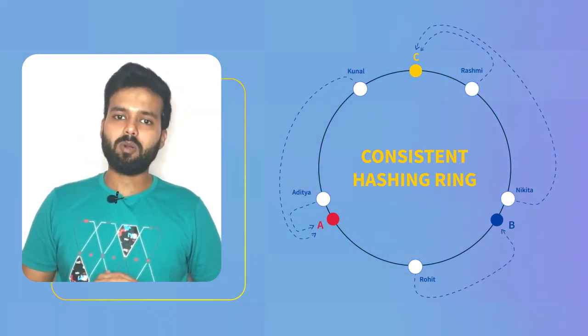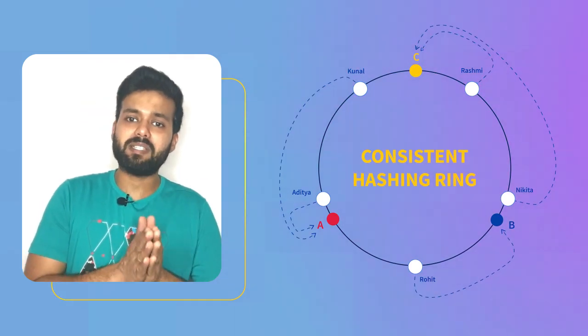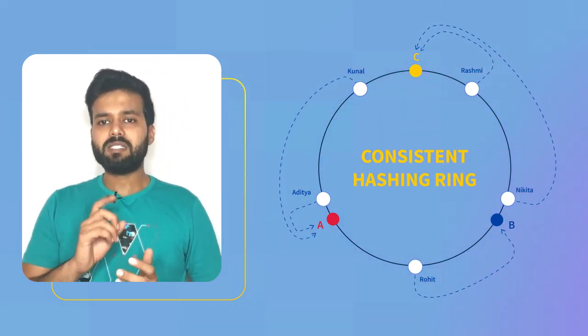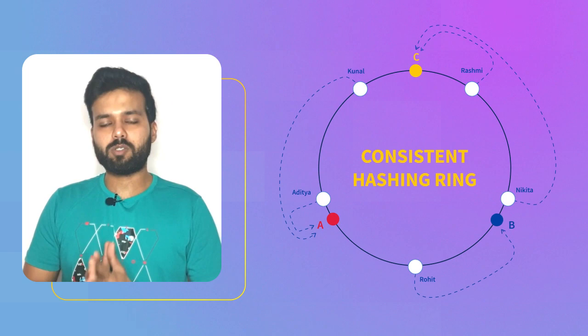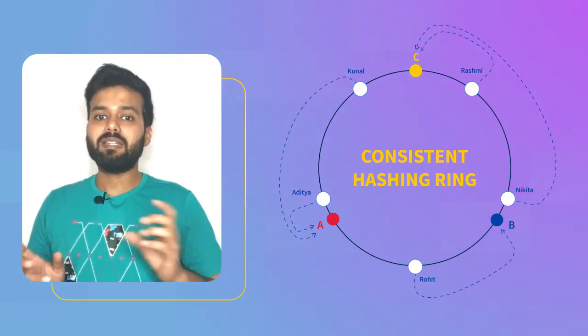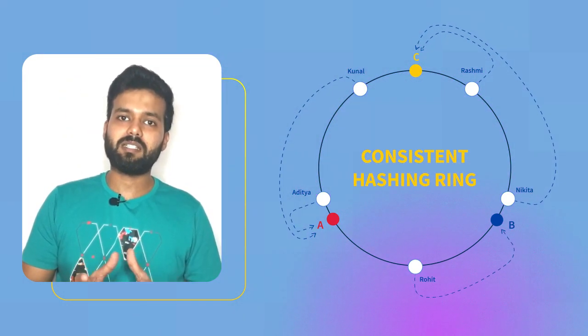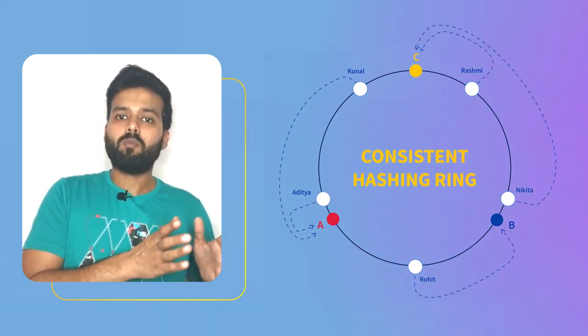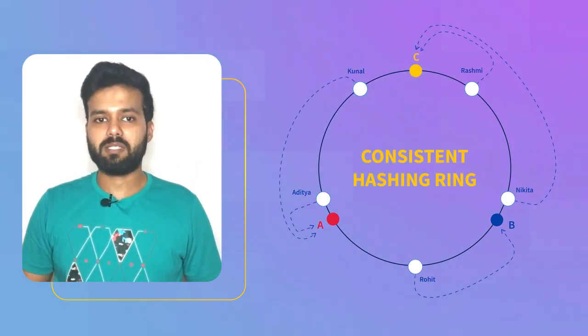And the second one is the weighted routing where we might have a scenario where one server has twice the number of resources as the other servers. In that case, we need to ensure that the servers with more resources gets more number of requests.